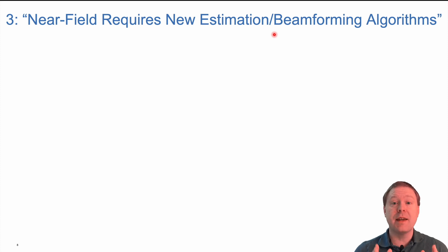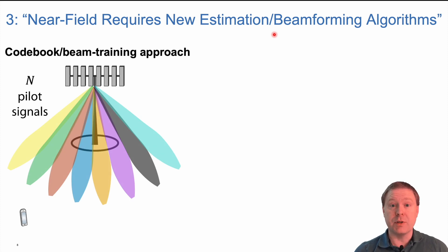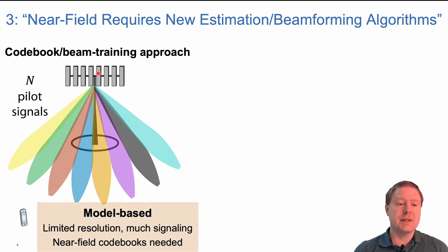The third and final misconception is that the near field requires new estimation and beamforming algorithms. We have developed a lot of nice algorithms for estimation and beamforming in 5G already. One category is the codebook or beam training approaches where we let the base station send signals in different beams and then the user device reports back which beam it prefers. These algorithms are model-based. We need to have a model of the propagation channel and know what the array looks like to form beams in the direction we want. One problem is that we have limited resolution because we're only sending a limited number of beams. We need a lot of signaling because if we have n antennas, we need to send n pilot signals in n different dimensions. If we follow this approach, we need to develop near field codebooks that focus at different near field locations.